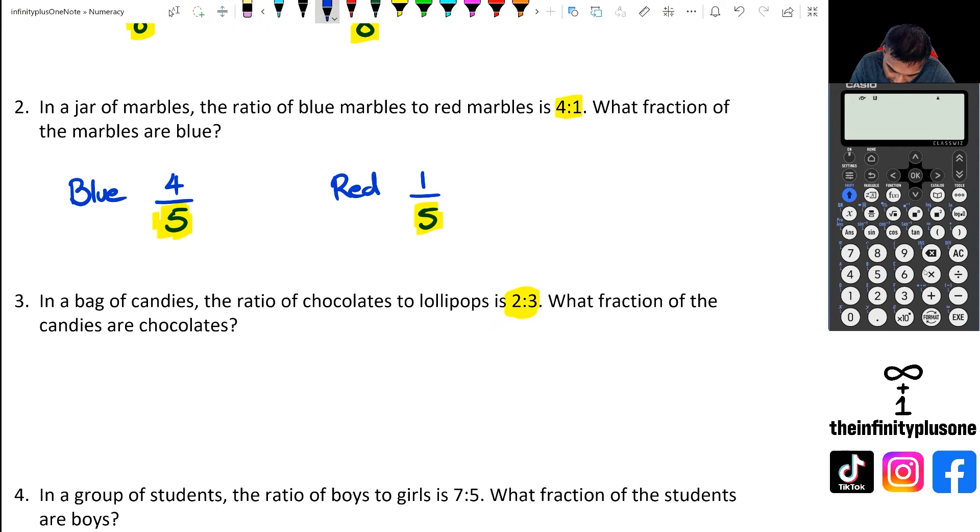So if you look at question three, we've got all together total parts is five and we've got chocolates and we've got lollipops. So chocolates out of 5 is going to be 2, and lollipops out of 5 is going to be 3.